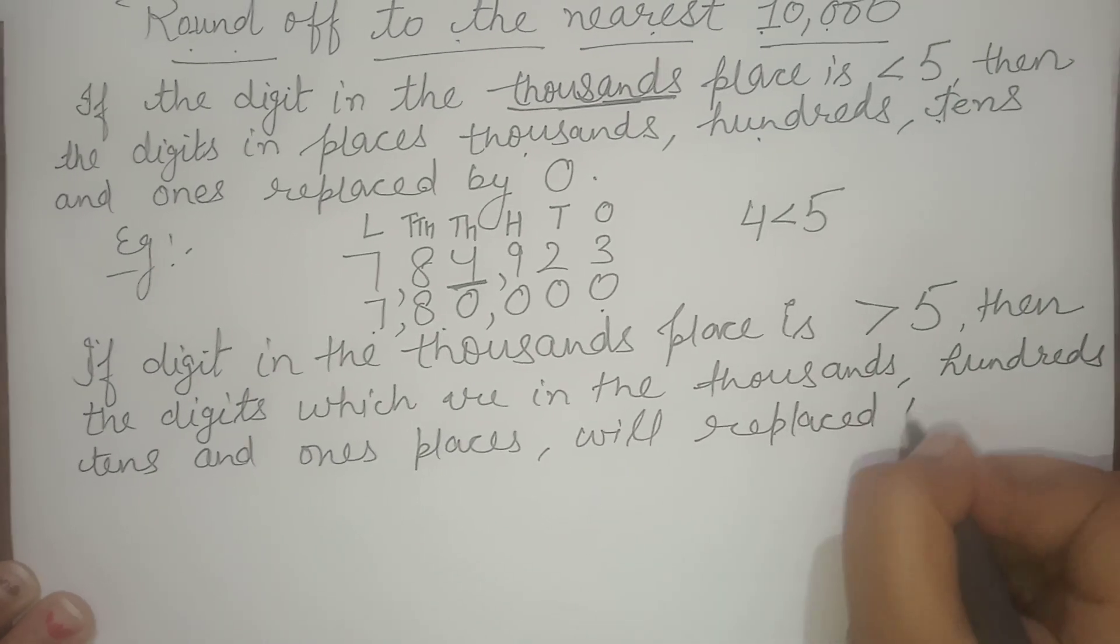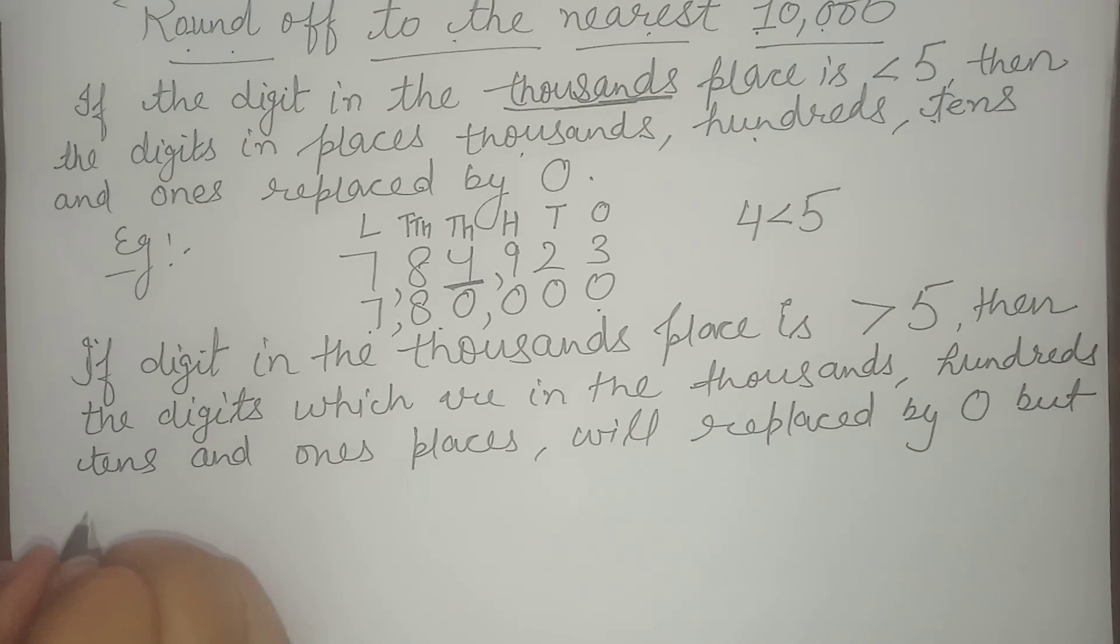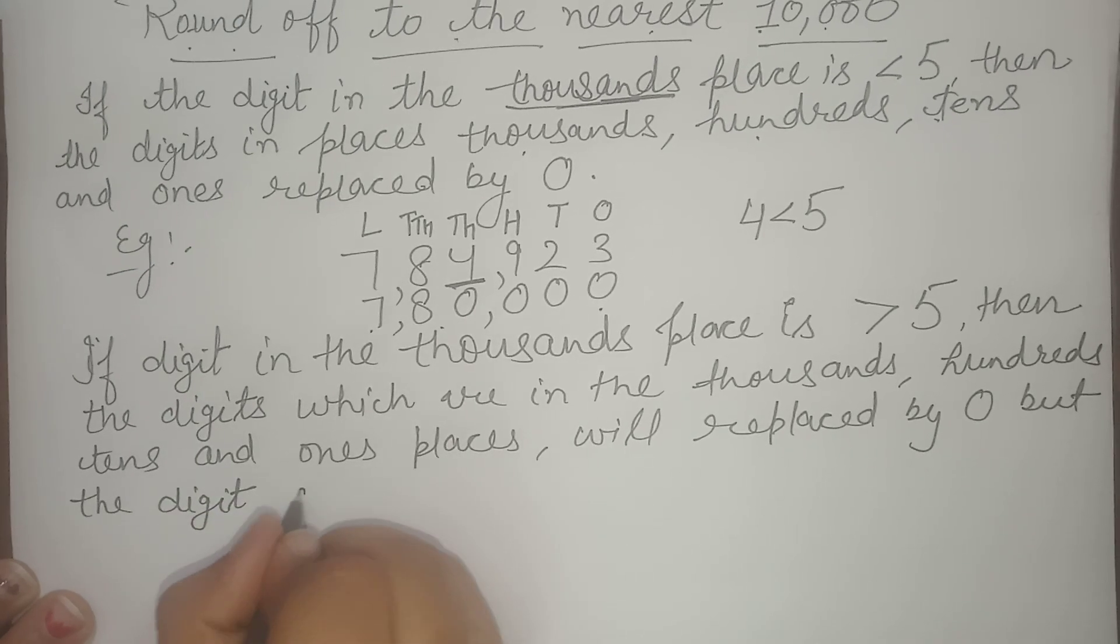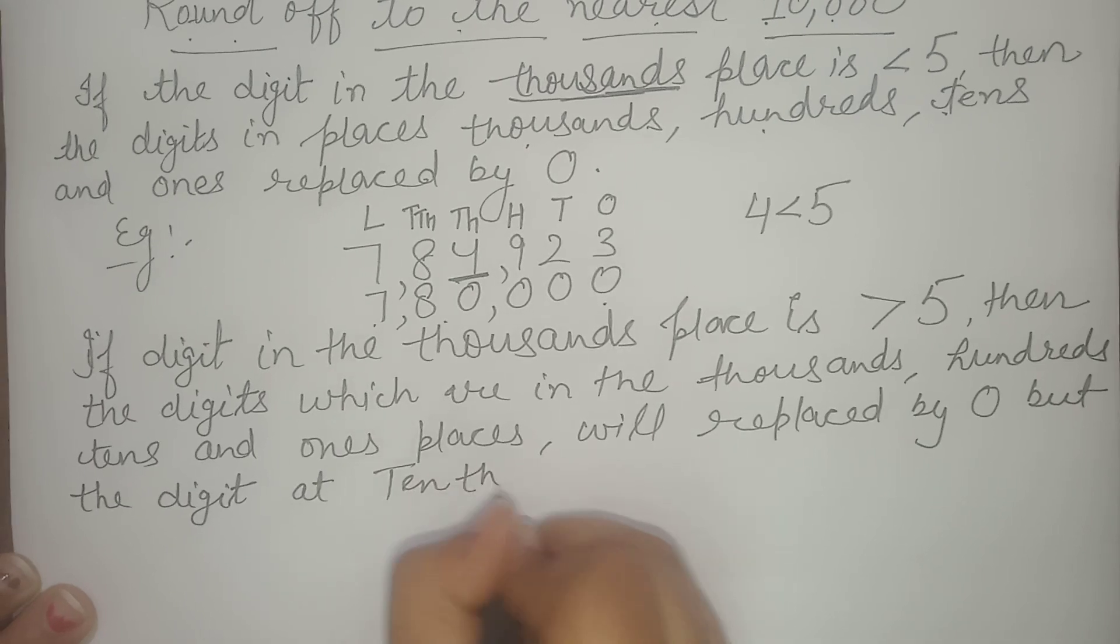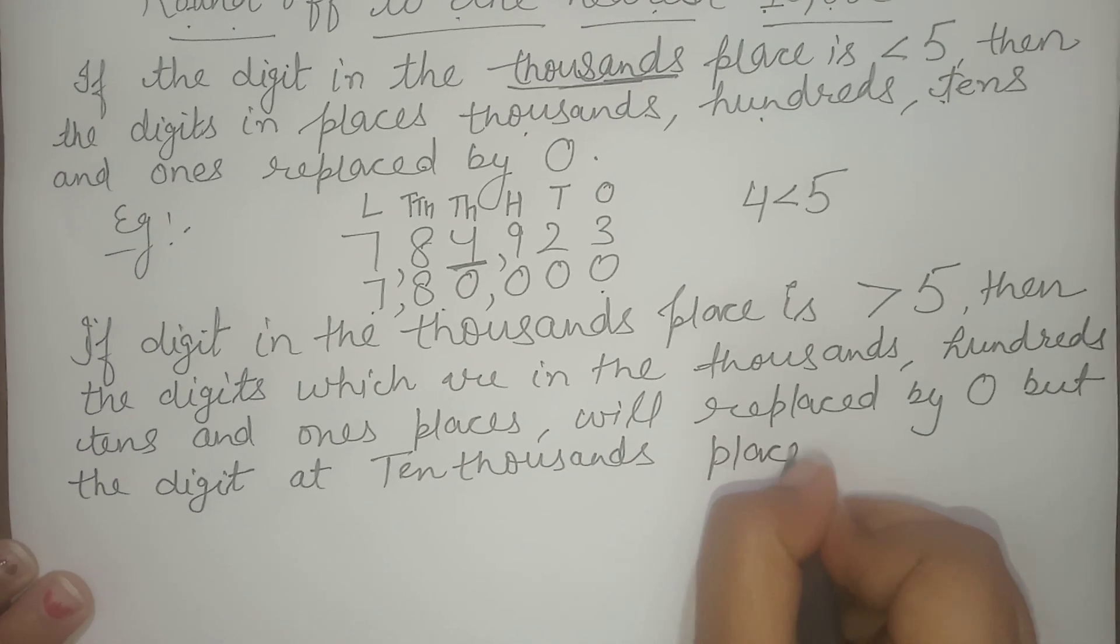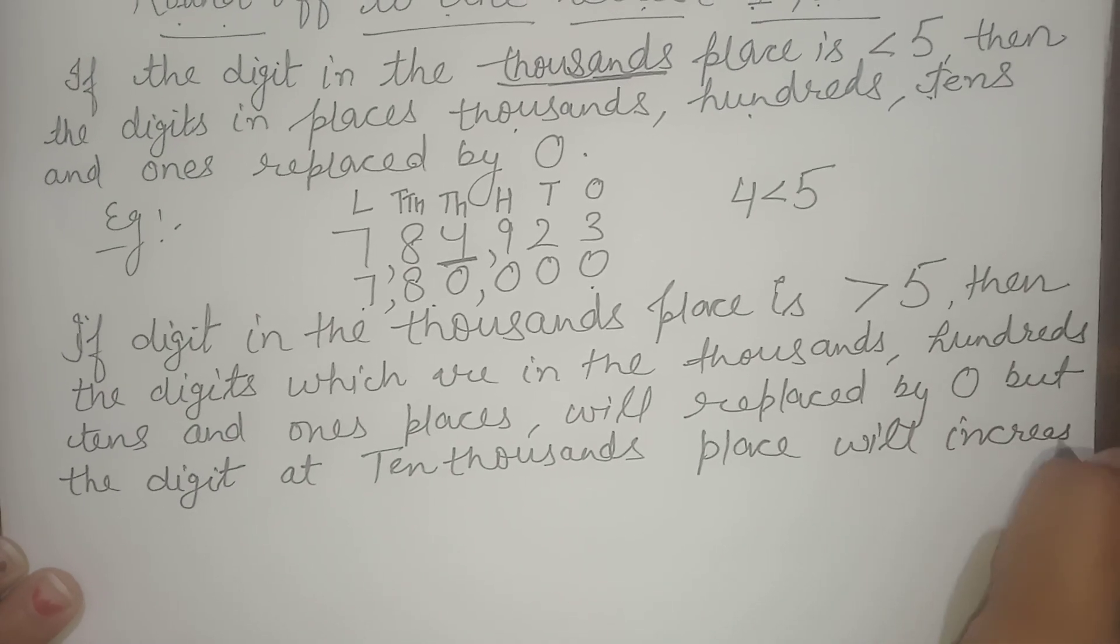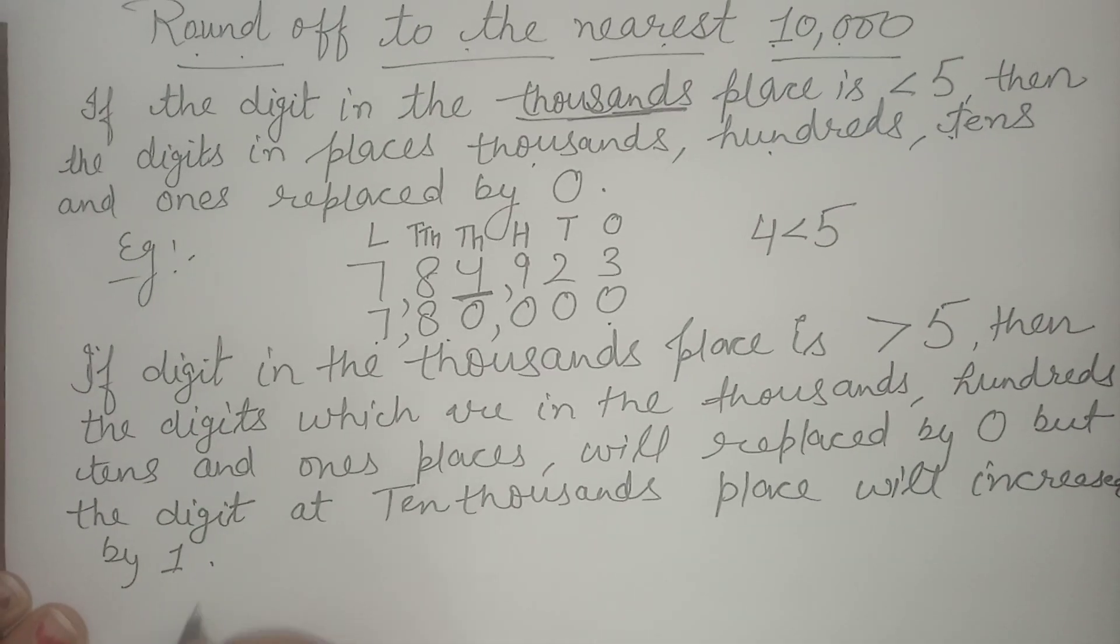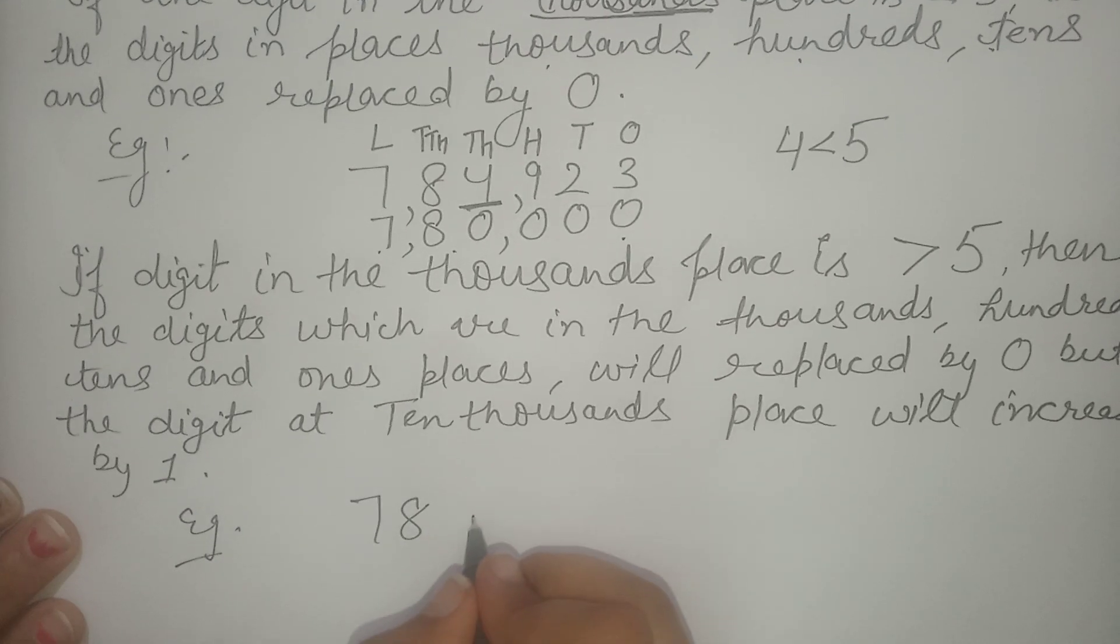But the digit at 10,000 place will be increased by 1. I'm writing here. Now I'm taking the same number with a little difference.